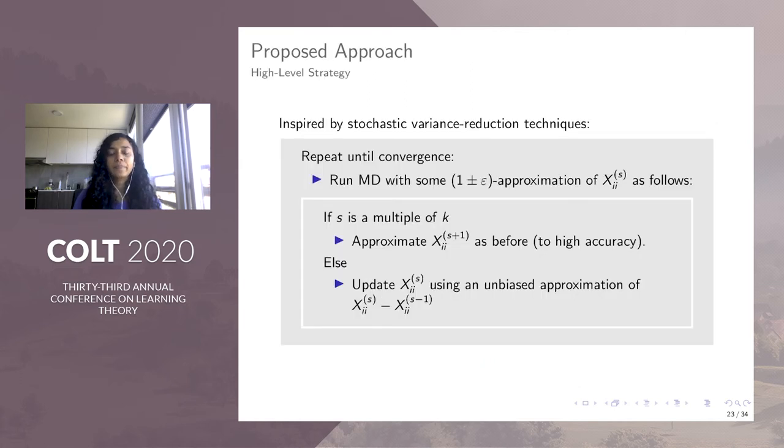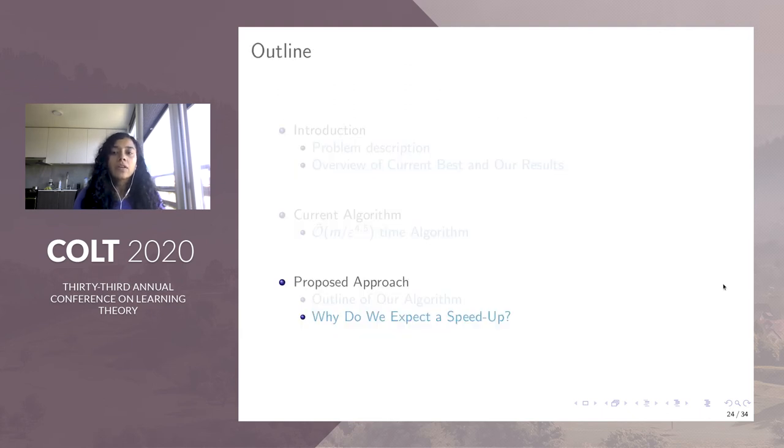We now show an outline of our algorithm. We also run mirror descent with some 1 plus minus epsilon approximation of the diagonal entries. But here's the difference. Most of the steps, we compute only an unbiased approximation of the difference between the current and the previous iterate, which means current and previous Xii's. And periodically, every k steps, we compute this Xii to high accuracy, again using the JL transform. That is the main idea. So our main technical contribution is to show how you can construct such a good estimator with good properties. And we believe that such an estimator can be of independent interest because of the ubiquity of mirror descent with negative entropy in theoretical computer science and machine learning.